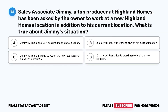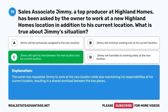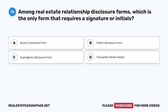Question 75. Sales associate Jimmy, a top producer at Highland Homes, has been asked by the owner to work at a new Highland Homes location in addition to his current location. What is true about Jimmy's situation? A. Jimmy will be exclusively assigned to the new location. B. Jimmy will continue working only at his current location. C. Jimmy will split his time between the new location and his current location. D. Jimmy will transition to working solely at the new location. The correct answer is C. The owner has requested Jimmy to work at the new location while also maintaining his responsibilities at his current location, resulting in a shared workload between the two places.